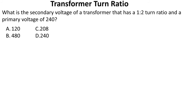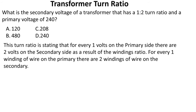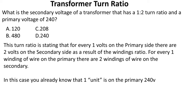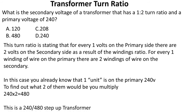What is the secondary voltage of a transformer that has a one-to-two ratio and a primary voltage of 120? This turn ratio states that for every one volt on the primary, there are two volts on the secondary. We already know one unit on the primary is 240. Multiply 240 by two and that equals 480. This is a 240-to-480 step-up transformer. We select B.